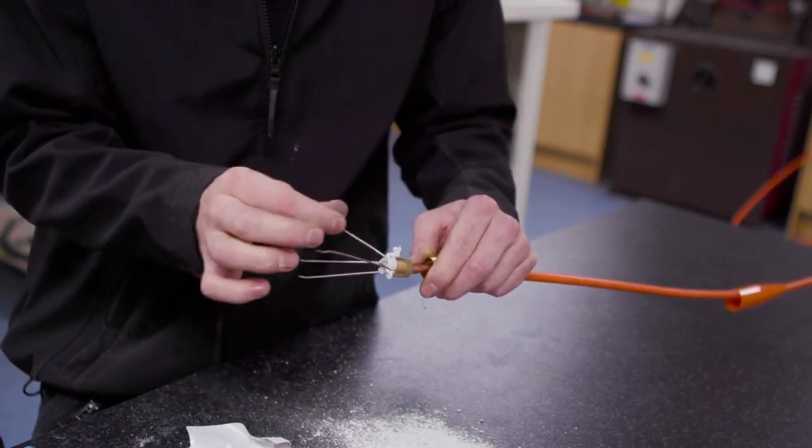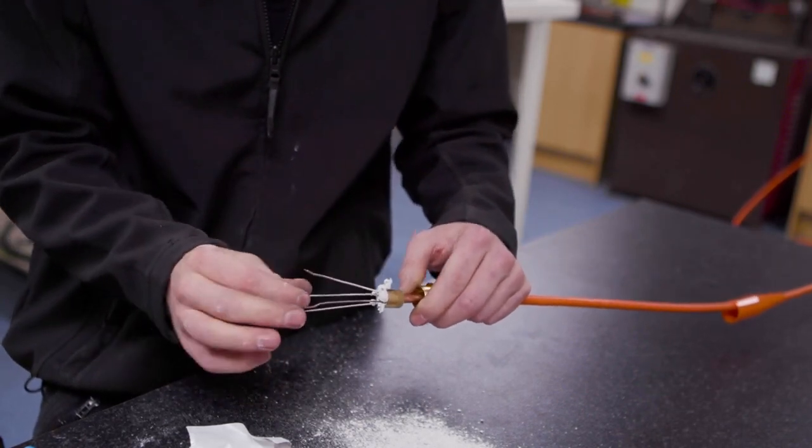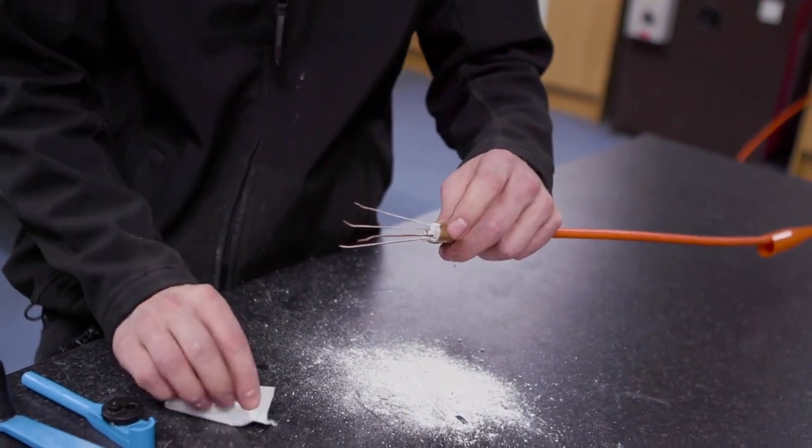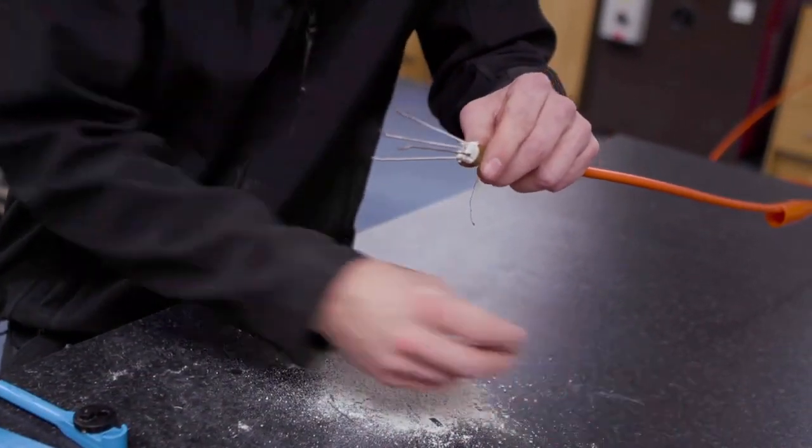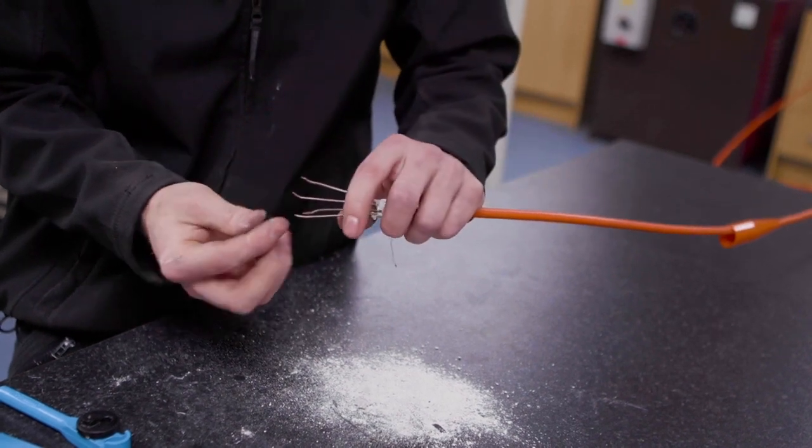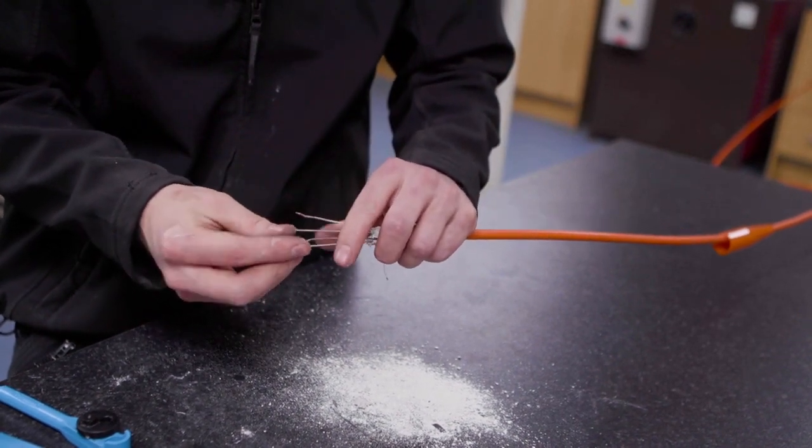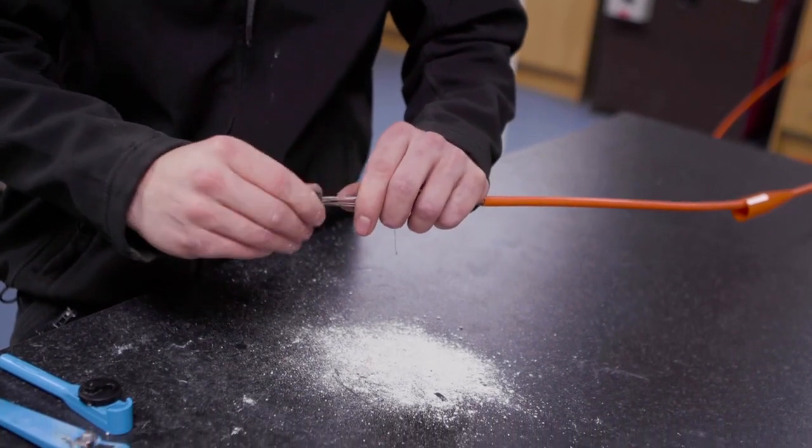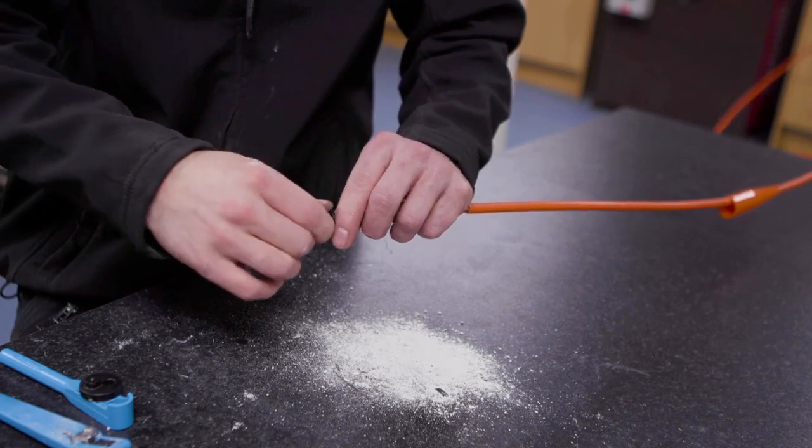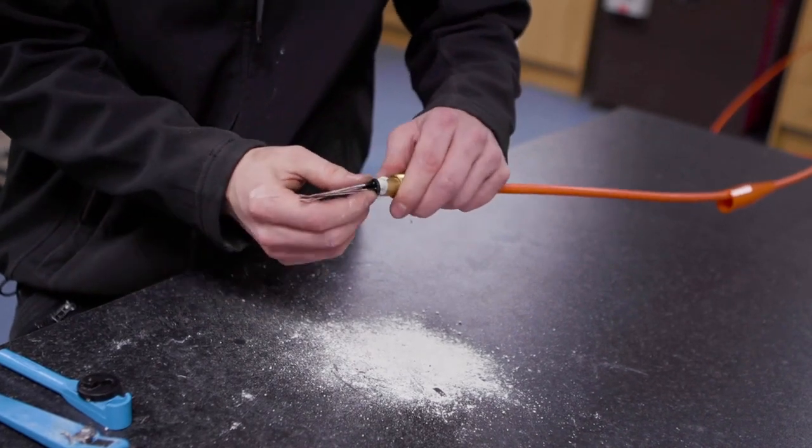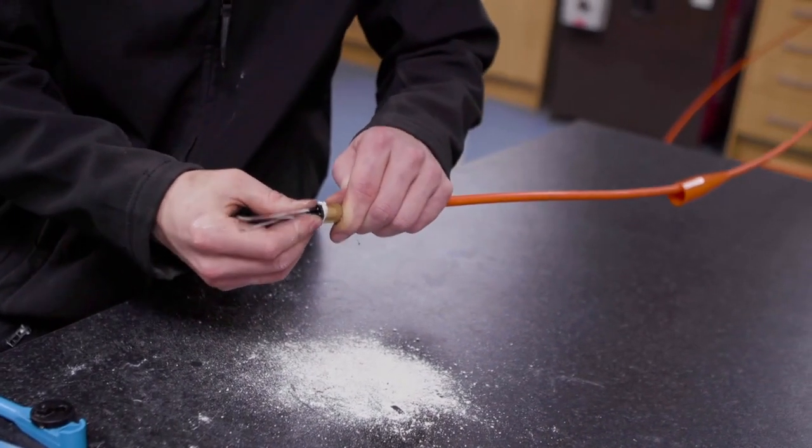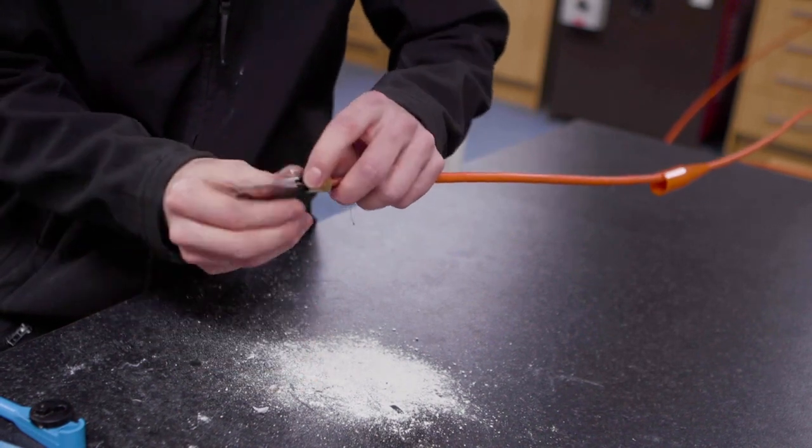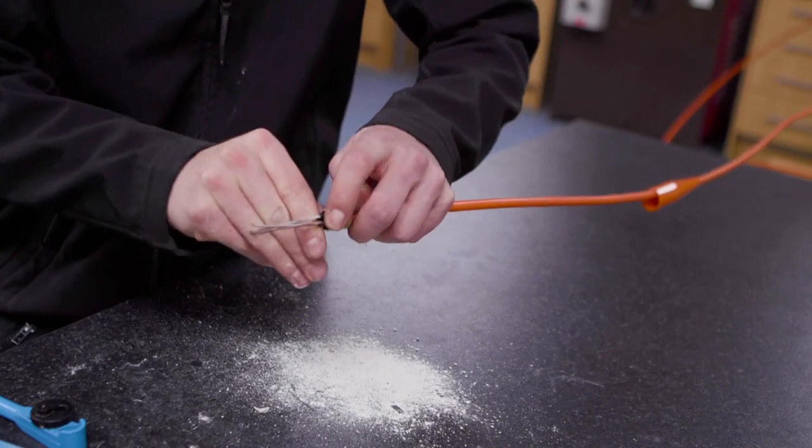Then we'll straighten our conductors back out, get rid of any of the excess compound and put our stub cap over our conductors, pushing that all the way down to the top of the pot. Again, get rid of any excess compound, push it in so it's flush.